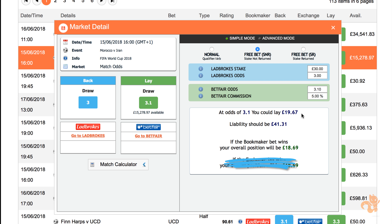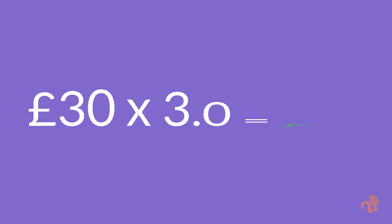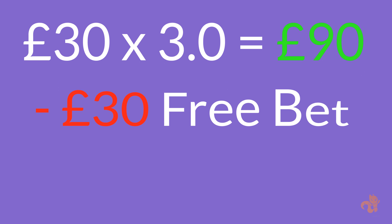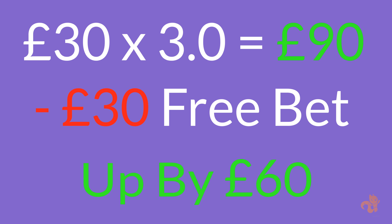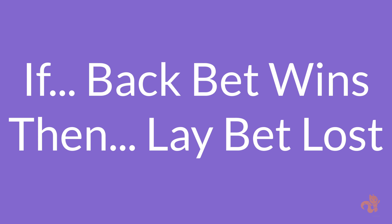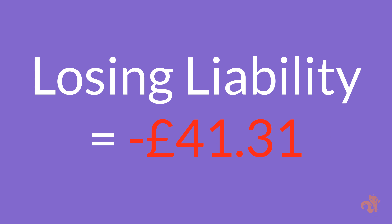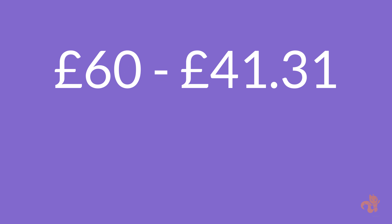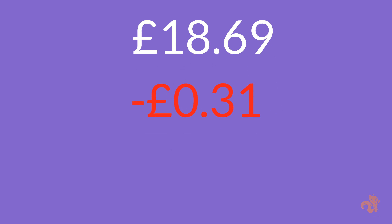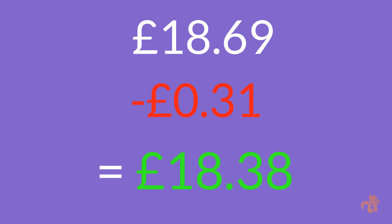Scenario number one: your back bet wins and your lay bet loses. Your back stake multiplied by your back odds is £30 multiplied by 3.0, which equals £90. Remember, you don't get the bookmaker stake returned — the amount of the free bet — therefore you're up by £60. If your back bet wins, then your lay bet lost, resulting in losing your liability amount of £41.31. Therefore, £60 minus £41.31 equals £18.69 of guaranteed profit. Subtract your original qualifying loss of 31p to give you your final profit figure of £18.38.